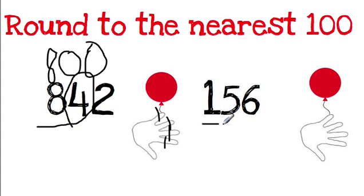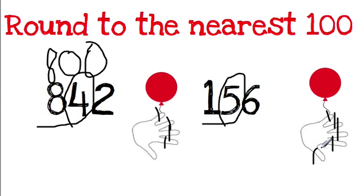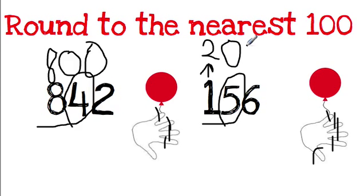Again, underline the 100s place, circle the spot next door. Holding onto my balloon, I count: 1, 2, 3, 4, 5. Once I let go, my balloon goes up — just like the number I underlined goes up by 1. So 1 plus 1 is 2, this becomes a 0, and this becomes a 0. So 156 rounded to the nearest 100 is 200.